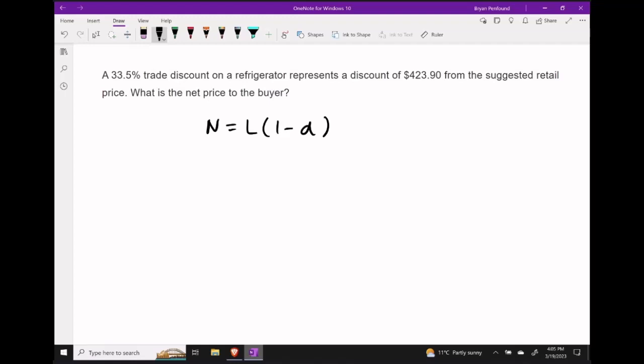Now here we do want to try to apply the formula that the net price is equal to the list price times 1 minus the discount. But the two values that we have, 33.5% and $423.90, can't both be put into this formula easily.